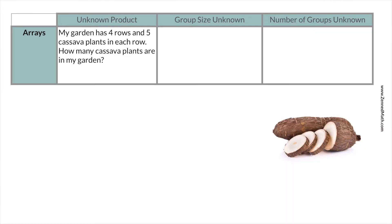Let's dig into some word problem types with examples. But before getting started, I'm going to share a little pet peeve of mine. Technically, when we show array problems, all the problems have to do with farmers and their garden. Here is my suggestion: we have to make things culturally relevant — that is just non-negotiable.